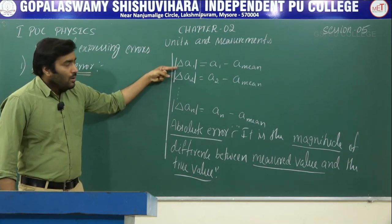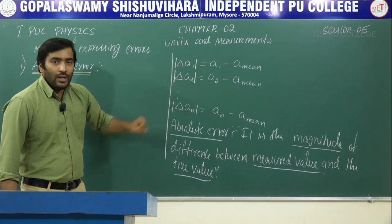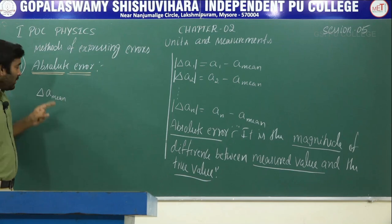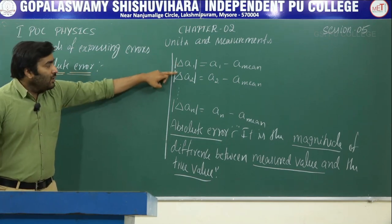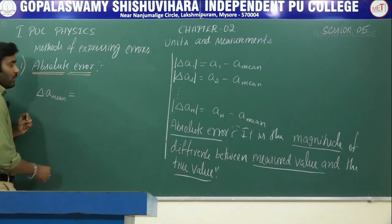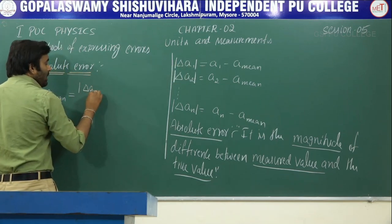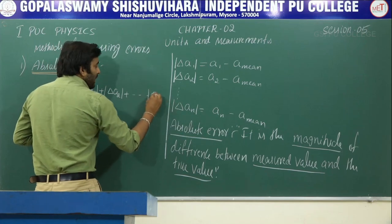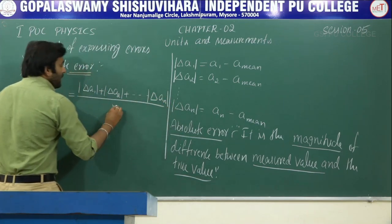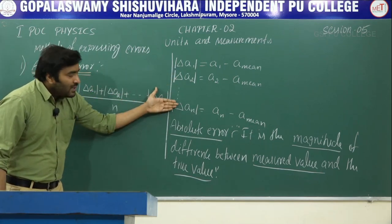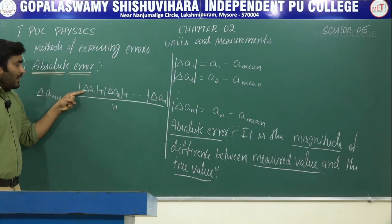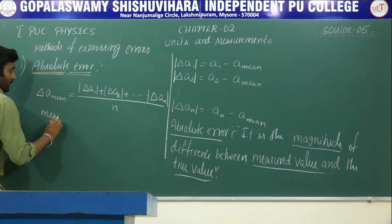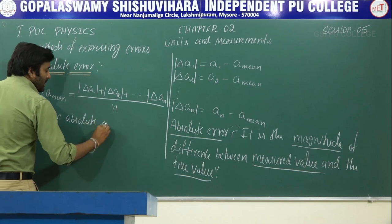Now let us write the mean value of all the absolute errors — delta A mean. Delta A mean is the mean of the absolute errors: delta A1 plus delta A2, up to delta An, whole divided by n. We are just taking the average of these absolute errors. This is called the mean absolute error.